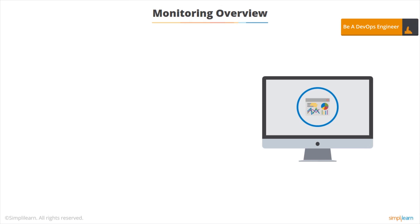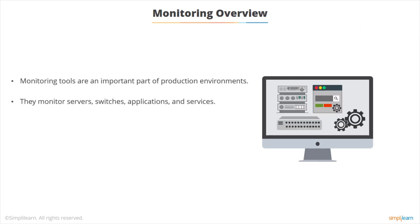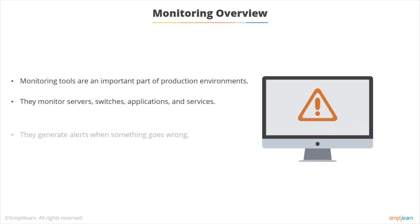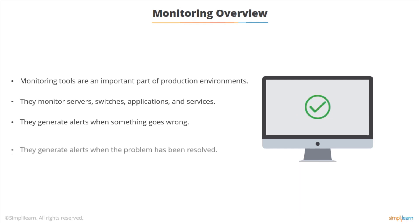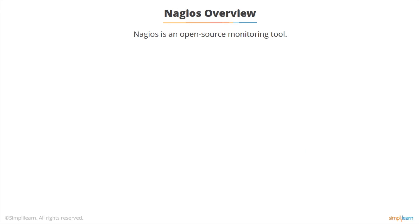Now we're going to look at monitoring systems, an important aspect of understanding whether various systems are working correctly. Monitoring tools are pretty important for production environments — you can't really have a complex production environment without some kind of monitoring tool. They monitor various components, whether it be servers, switches, applications, or services. When something goes wrong, it'll generate an alert, and then another alert when the problem has been solved.